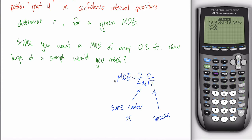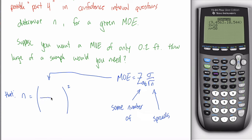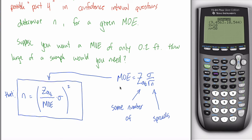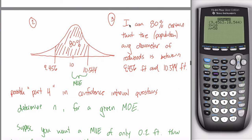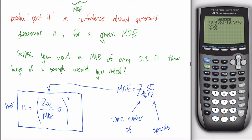If algebra is your thing, you could solve this equation for n — multiply the square root of n over, divide the margin of error, square both sides. Don't worry about that. Here's a formula I'll always give you: n = (Z_(α/2) / MOE × σ)². I would give you this formula as a hint. On your quiz this week, there will be a part four that asks you to fill in the numbers to solve for n.